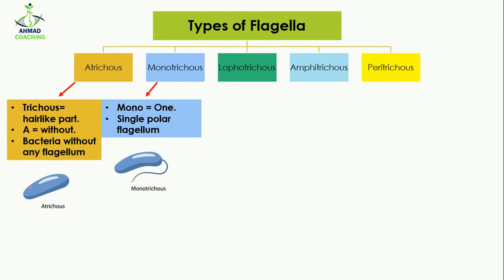The second type is monotrichus. Here 'mono' means one and 'trichus' means hair-like structure, so it means that a single polar flagellum is present — polar meaning that the flagellum is present at only one side or one pole of the bacteria.